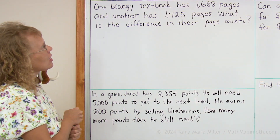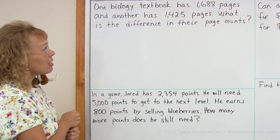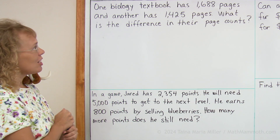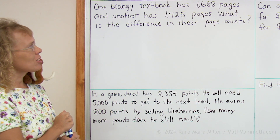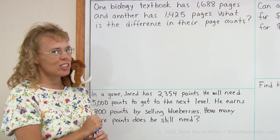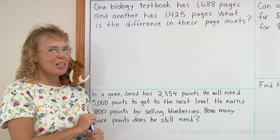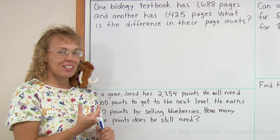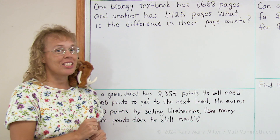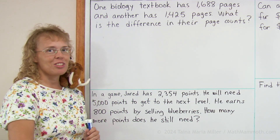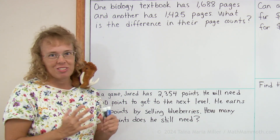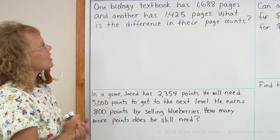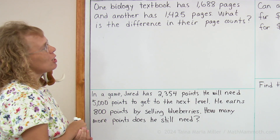One biology textbook has 1688 pages and another has 1425 pages. You might not have seen such heavy and thick textbooks, but they do exist when you go into college, university level. So what is the difference in the page counts?